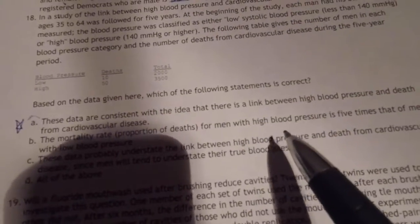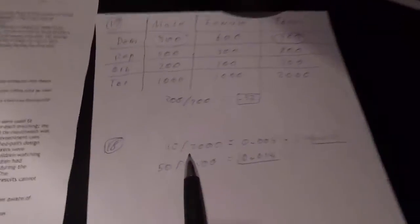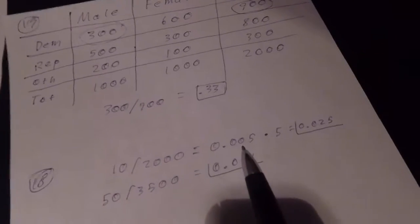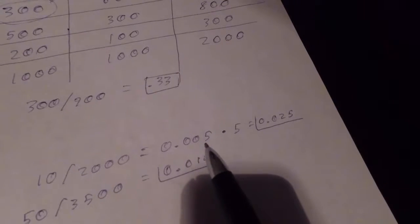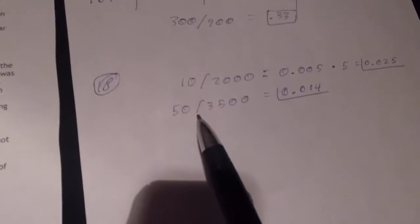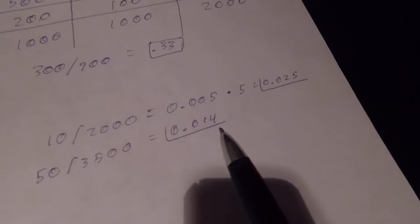B. The mortality rate proportion of deaths for men with high blood pressure is five times that of men with low blood pressure. I did the work right here. 10 divided by 2,000 - the proportion of men who die with low blood pressure is 0.005. The proportion who die with high blood pressure is 50 divided by 3,500, which is 0.014.